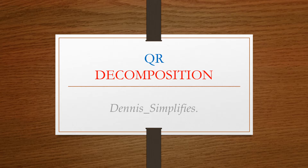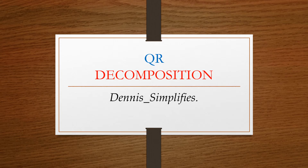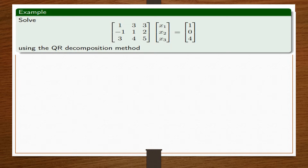Let's simplify. Solve the matrix A, X, and B using the QR decomposition method.